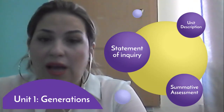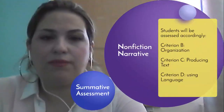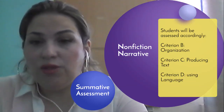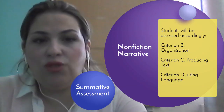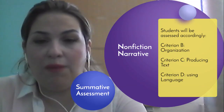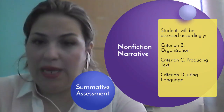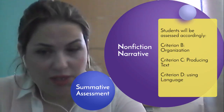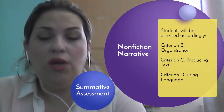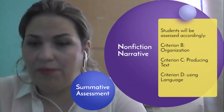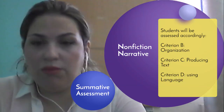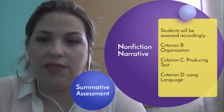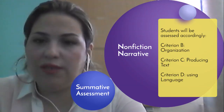Now I would like to talk about our summative assessment. Our summative assessment for this unit is to write a nonfiction narrative, and you are going to be assessed based on Criterion B, Criterion C, and Criterion D. You will be assessed upon your organization of the text, on producing texts with accuracy, on the way you use the language, and you will find the rubrics on the unit page.